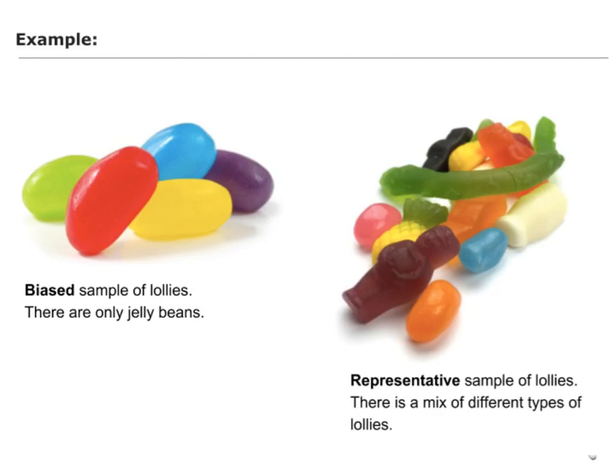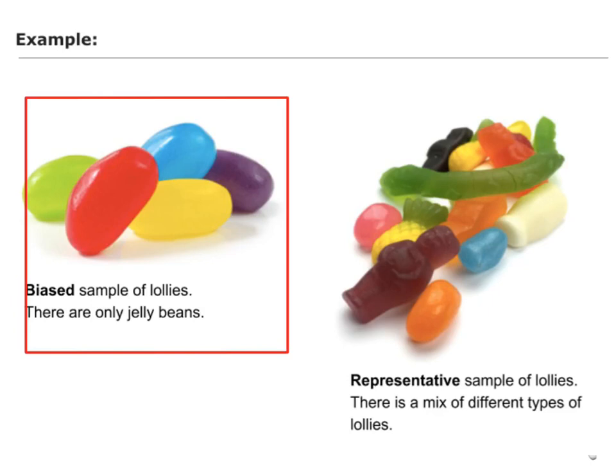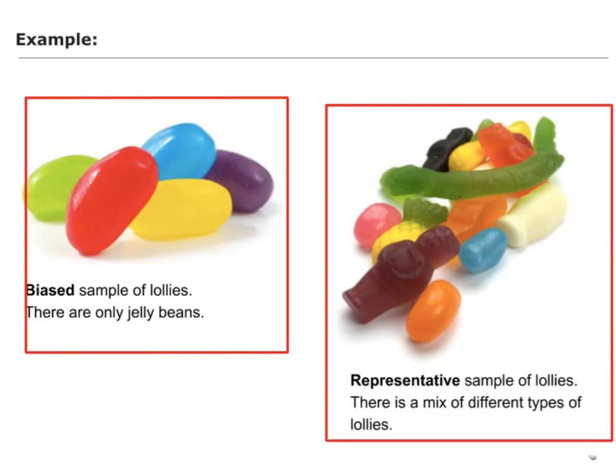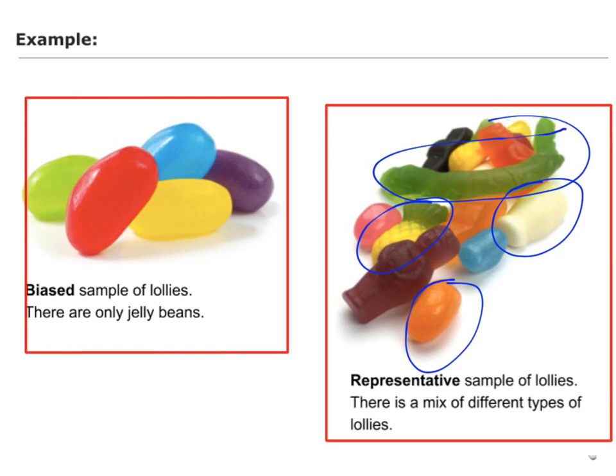Here's another example, as if I'm talking about lollies. On the left-hand side here, we've got an example of a biased set because in the sample there are only jelly beans. Whereas in my other set of lollies, this is a much more representative sample because I've got different types of lollies. For example, I've got jelly beans in there, milk bottles, pineapples, snakes, all sorts of different things in there, licorice and all sorts. So it's a much more representative mix.